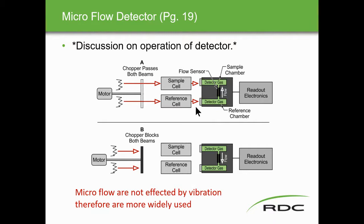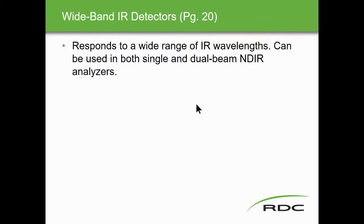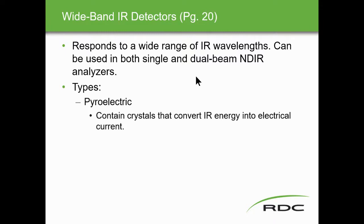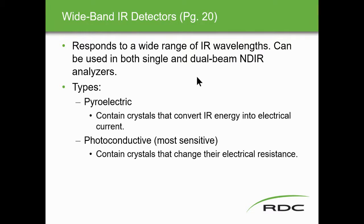Microflow detectors are not affected by vibration, so they are more widely used in plant environments compared to Luft detectors, which can be affected by vibration. Wideband IR detectors respond to a wide range of IR wavelengths and can be used in both single and dual beam NDIR analyzers. Types include pyroelectric detectors, which contain crystals that convert IR energy into electrical current, and photoconductive detectors, which are the most sensitive and contain crystals that change their electrical resistance.